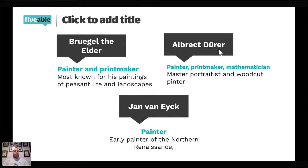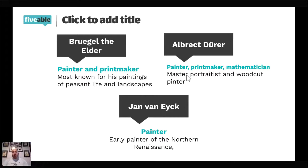Albrecht Dürer is from the Holy Roman Empire — he is German, a painter, printmaker, and also a mathematician, fitting the idea of a renaissance man who can do art, science, math, and language. He is most well known for his portraits, especially self-portraits, as well as his woodcuts. His math focused a lot on geometry, and he wrote two books about mathematics.